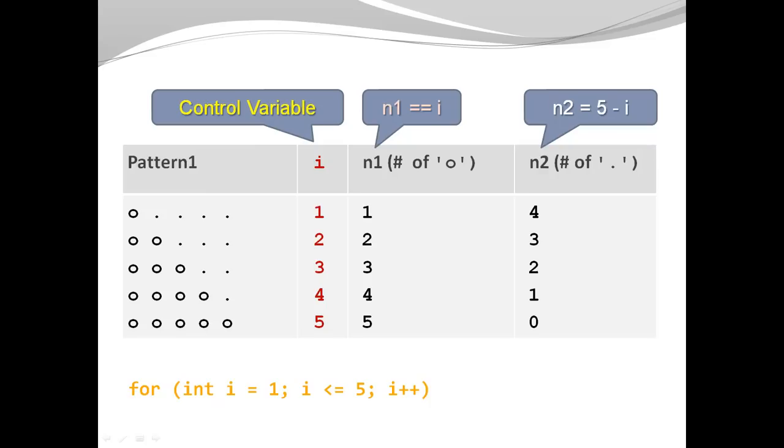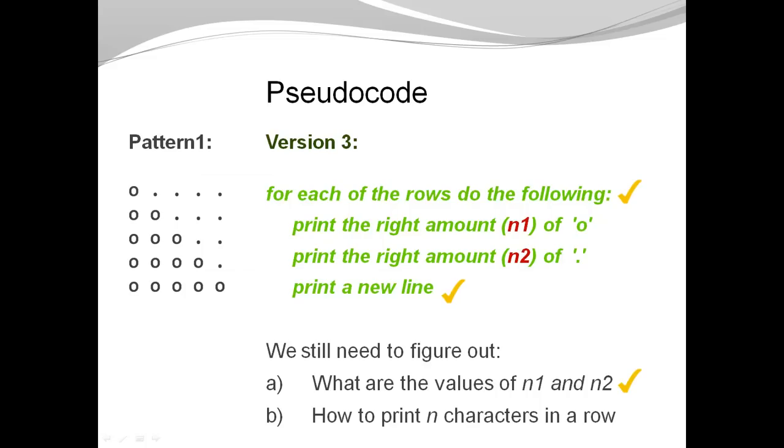And I realize n2 is 5 minus i. And at this point, I figured out what n1 and what n2 is based on a given control variable of an outer loop. I can go back to my pseudocode. I checked off what are the values of n1 and n2.